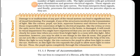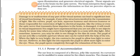Damage to or malfunction of any part of the visual system can lead to significant loss of visual functioning. If any structures involved in the transmission of light — like the cornea, pupil, eye lens, aqueous humor, and vitreous humor — or those responsible for converting light to electrical signals, like the retina, or even the optic nerve that transmits impulses to the brain, are damaged, it will result in visual impairment or complete loss of vision.